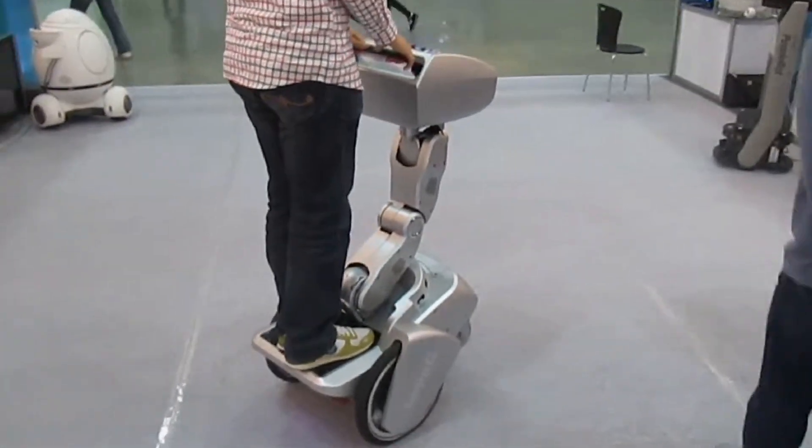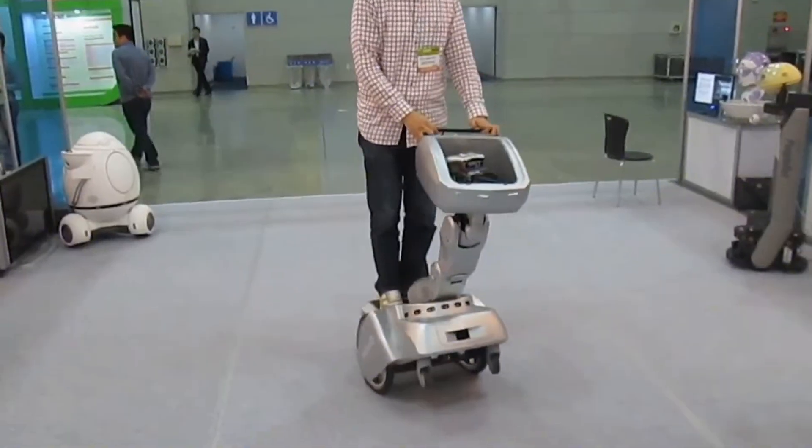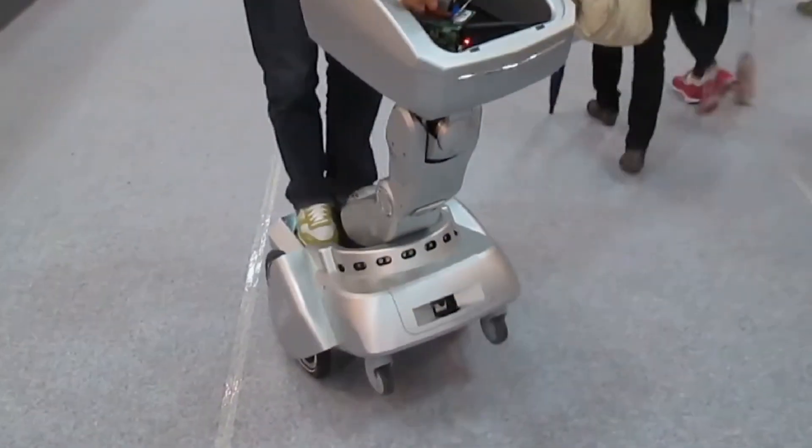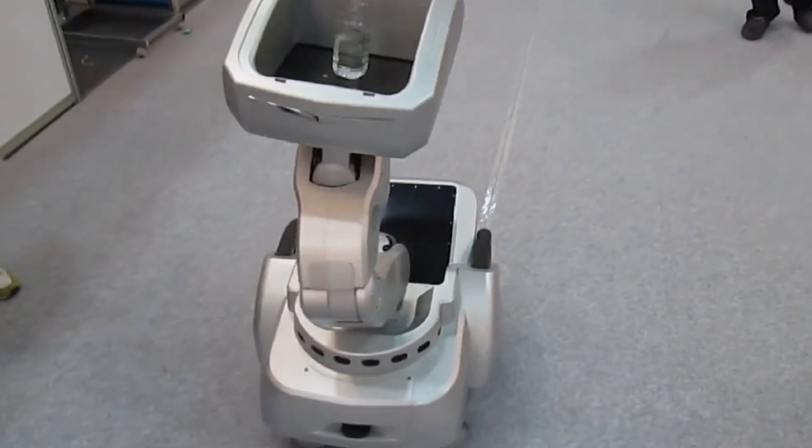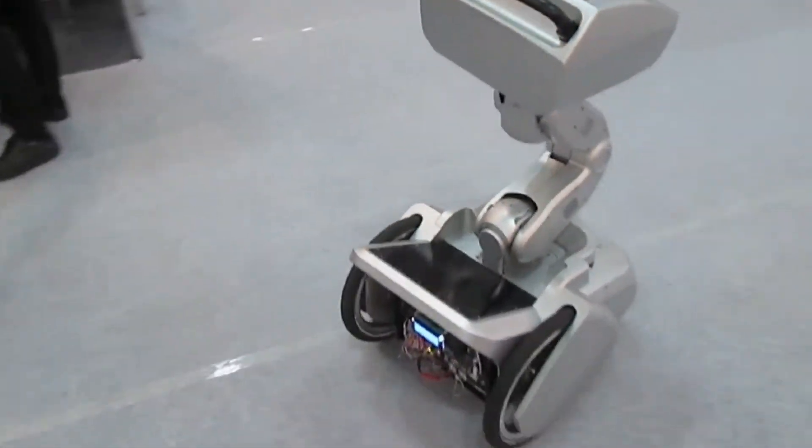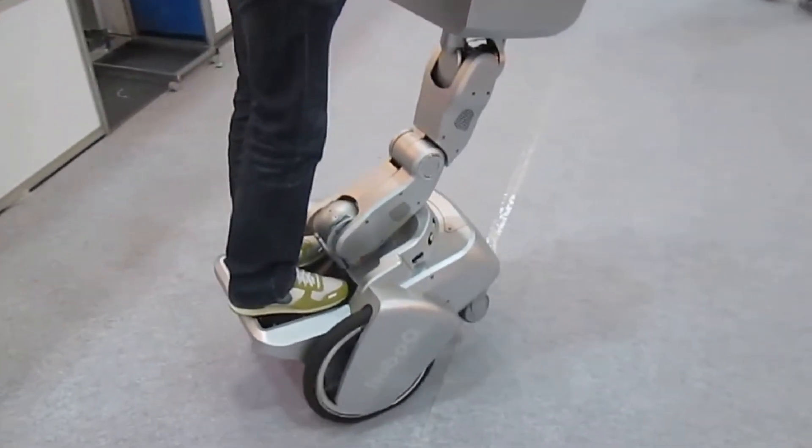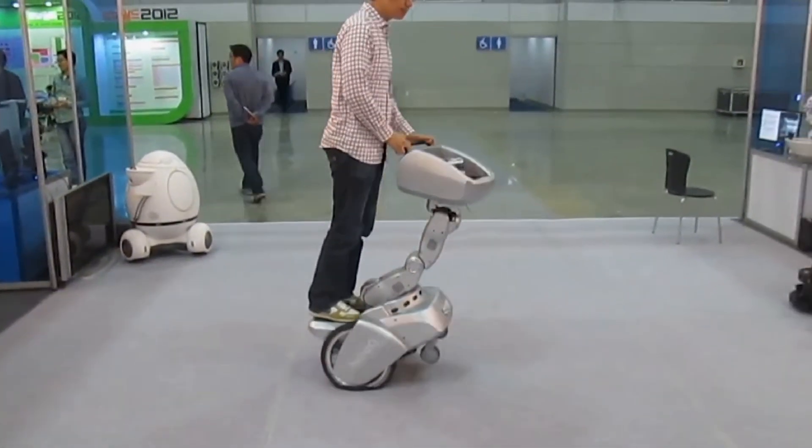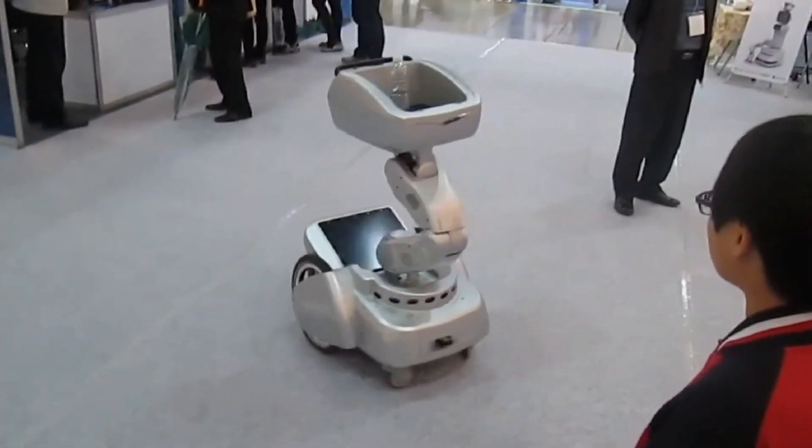The Korean Advanced Institute of Science and Technology has developed HUBO-Q, an autonomous mobile robot designed for personal transportation. This robot is part of the renowned HUBO series, known for its advanced humanoid and mobile robotic systems. HUBO-Q is designed to transport people safely and efficiently, with a focus on comfort and ease of use.